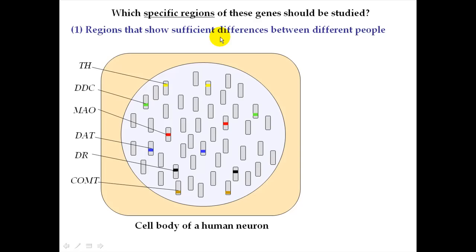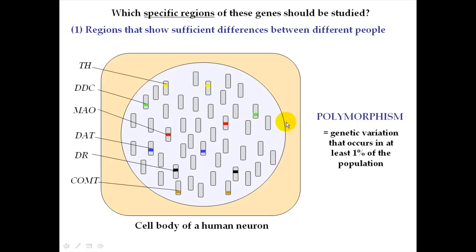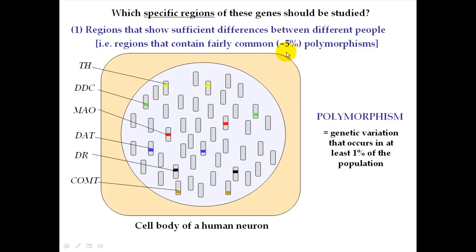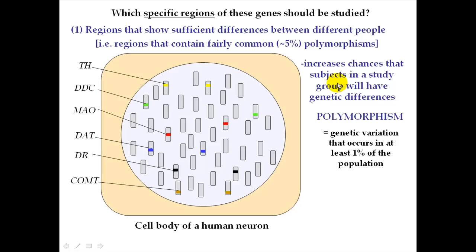There are a few terms associated with this idea of different gene segments between different people. One term is polymorphism, defined as a genetic variation that occurs in at least 1% of the population. For our study, we're going to want to choose a gene region that has a fairly common polymorphism — somewhere around 5%. The reason we want a region that differs among at least 5% of the population is to have some guarantee that the gene region we study is different within our study population.